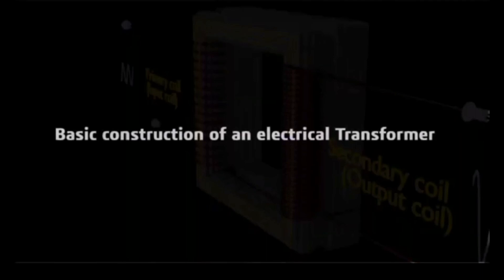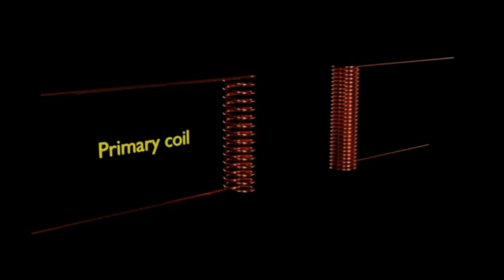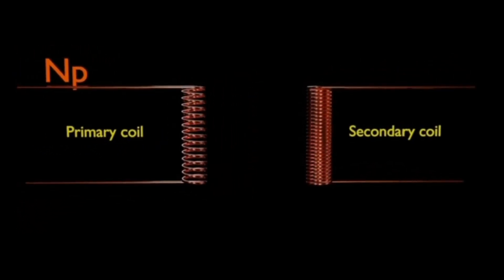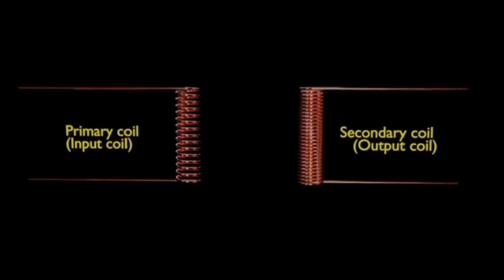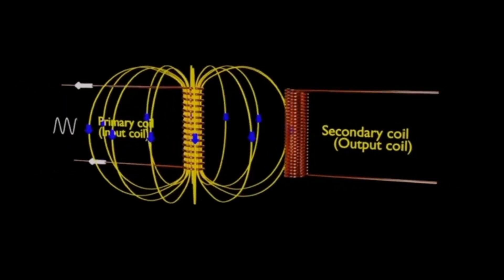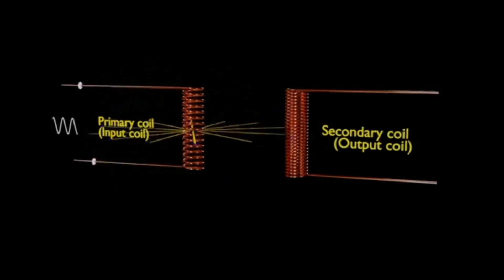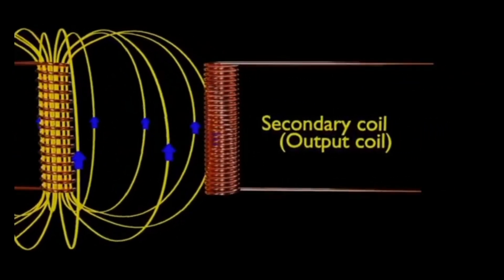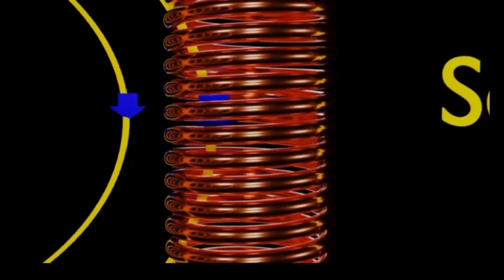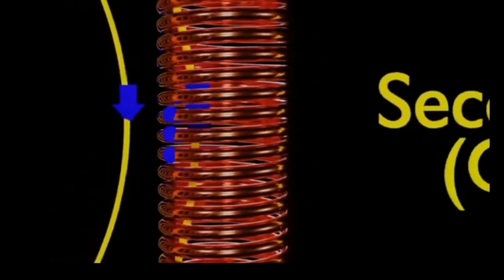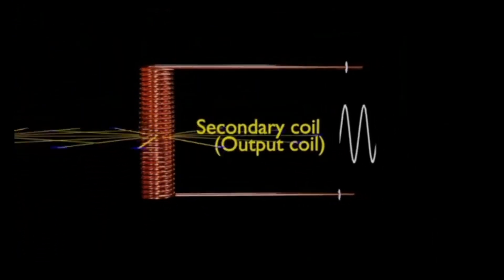Basic construction of an electrical transformer: a transformer consists of two sets of insulated coils. One of the coils, called the primary coil, has NP turns. The other coil is called the secondary coil and has NS turns. Often the primary coil is the input coil and the secondary coil is the output coil of the transformer. The electrical transformer works on the principle of mutual induction. When an alternating voltage is applied to the primary coil, the resulting current produces an alternating magnetic flux which links to the secondary coil and induces an EMF in it, which forces the free electrons of the secondary coil and therefore produces alternating current in the secondary coil.